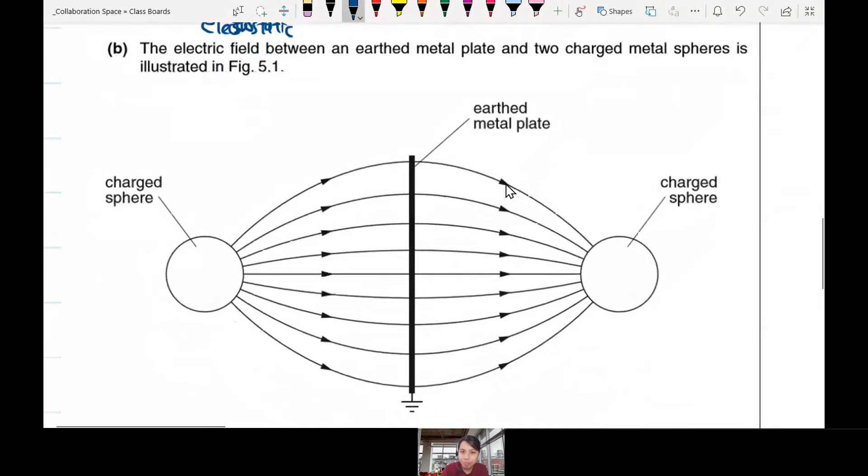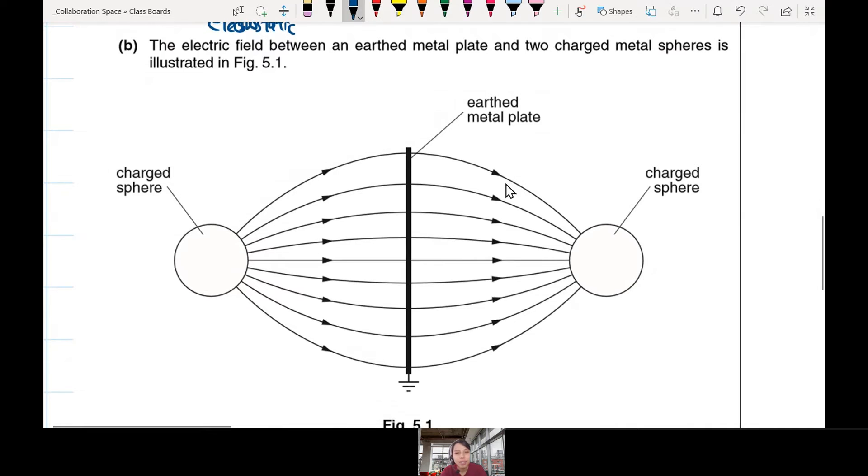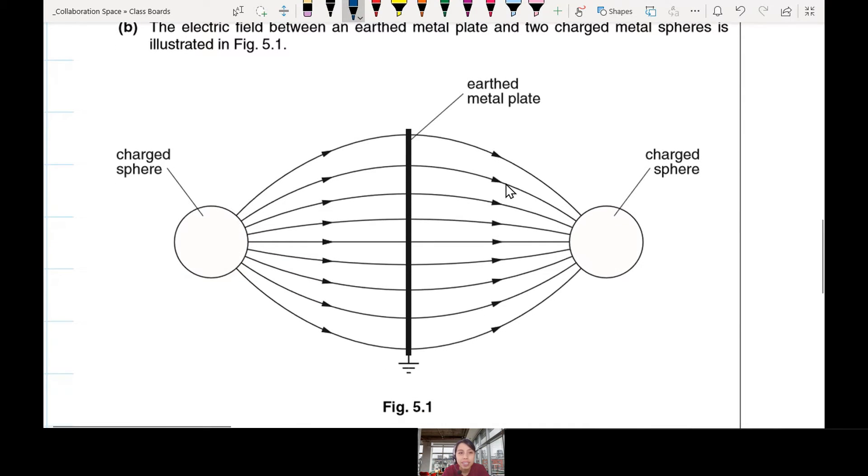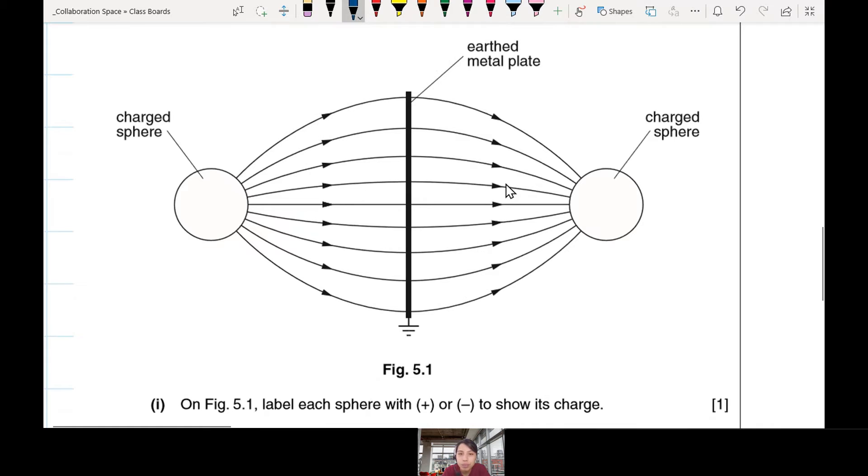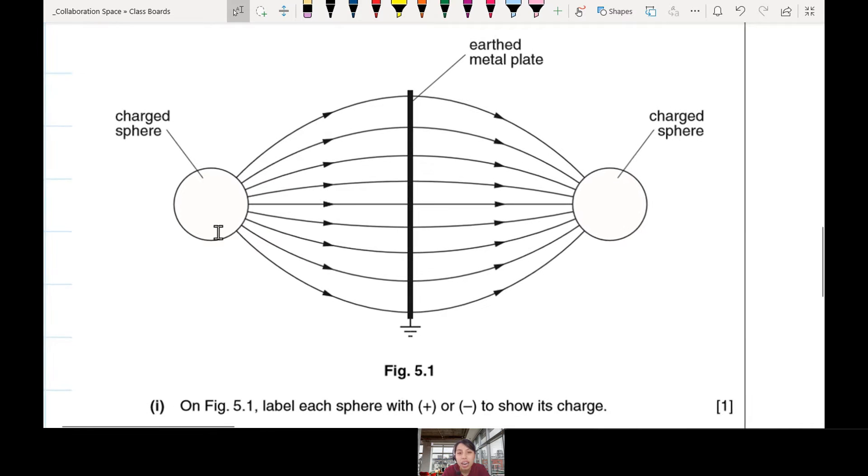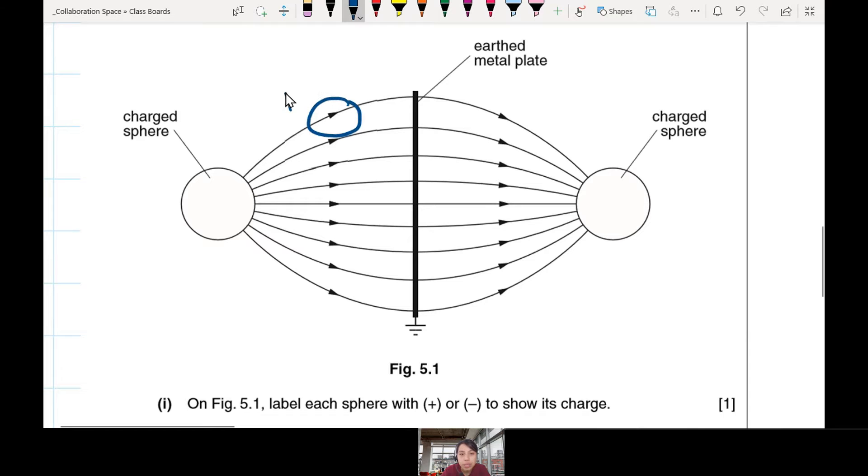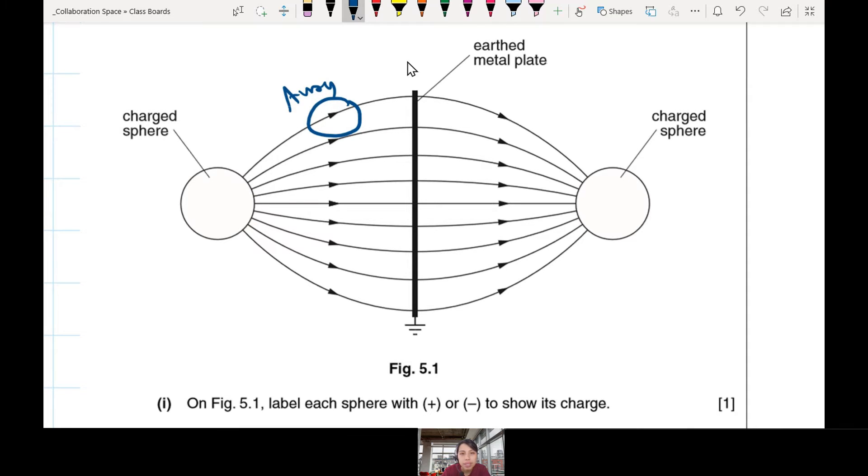So you have this interesting setup. The electric field between earthed metal plate and two spheres is shown. On figure 5.1, label each sphere with positive or negative to show its charge. How do you know which one is which? You see the direction of the arrow, it's going away from this sphere, right? Means this one is going to be our positive charge. On the other side, you see all this arrow is going towards the charge, so here you can say it's a negative charge. Defined by convention: positive away, negative go towards the charge.